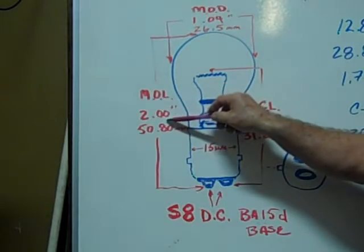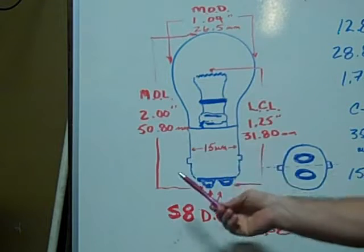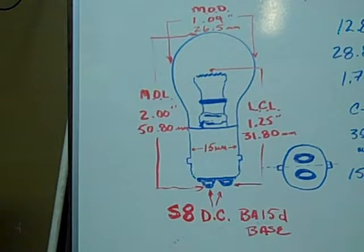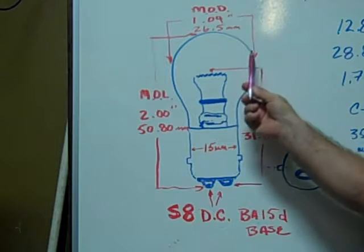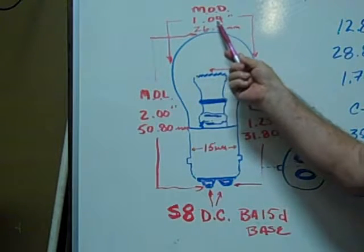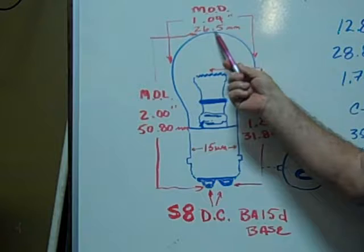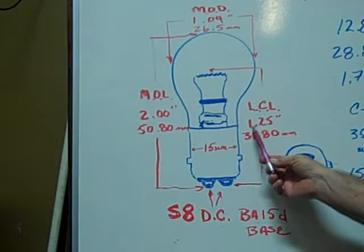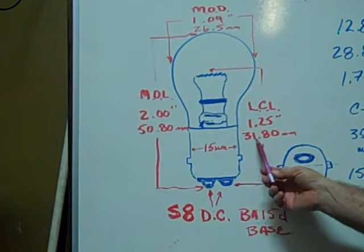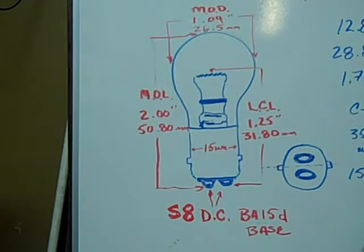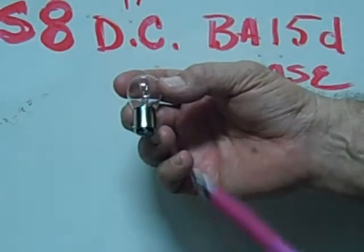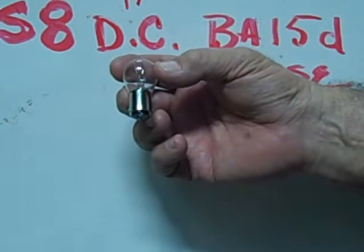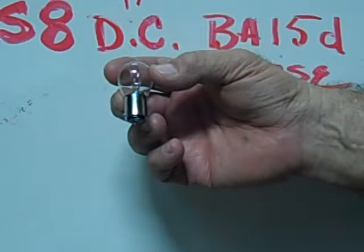The maximum overall length is 2 inches or 50.80 millimeters. The maximum outer diameter is 1.04 inches or 26.5 millimeters. The light centered length is 1.25 inches or 31.80 millimeters. This is an example of a number 308 BA-15D based miniature bulb.